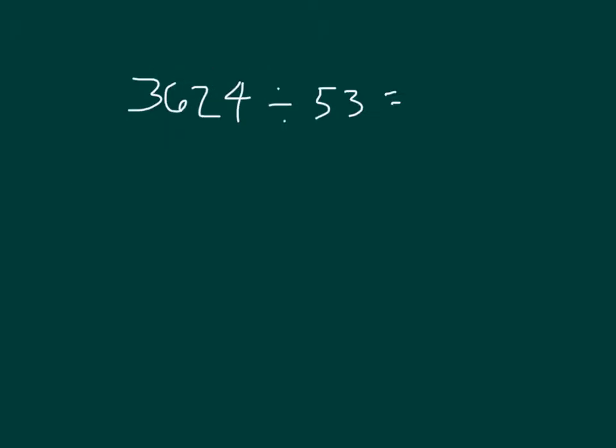We now have 3624 divided by 53, and again we are looking to estimate that quotient. And in order to estimate the quotient, we look at the divisor first. Which of these two numbers is the divisor? Right, 53. And what we'll do with 53 again is we will round it. 53 rounded to the nearest tens place is 50. So now we have 3624 divided by 53 is about something divided by 50.